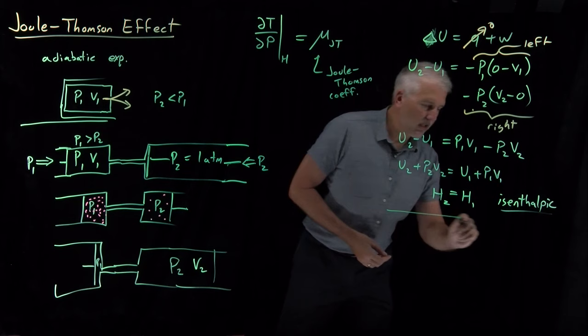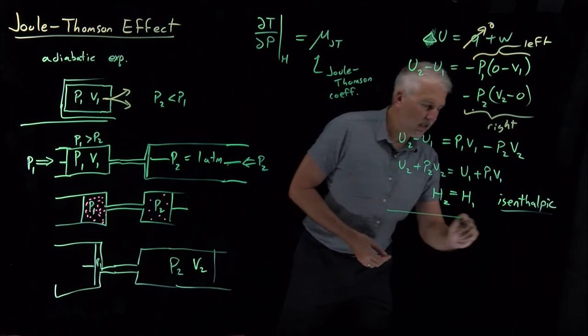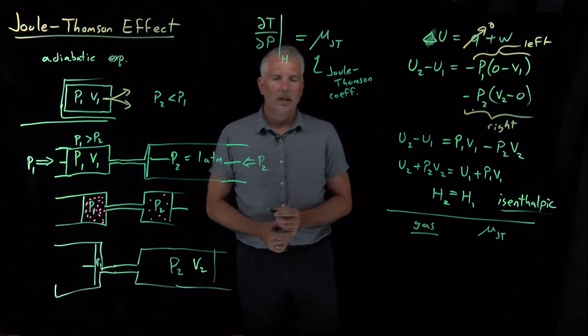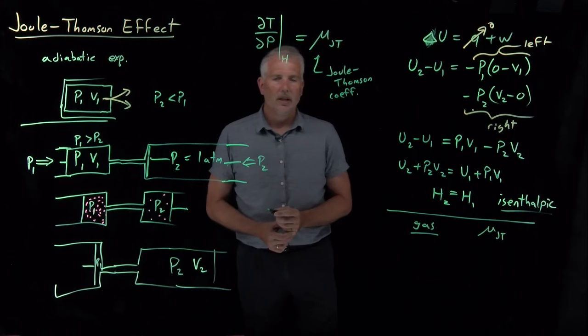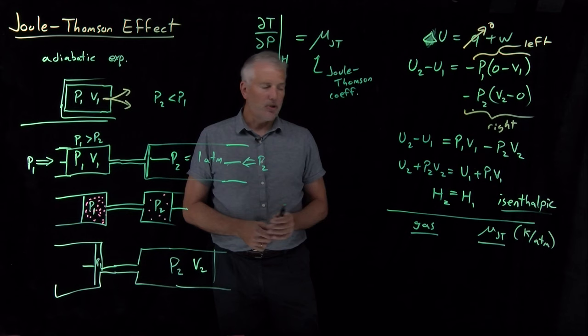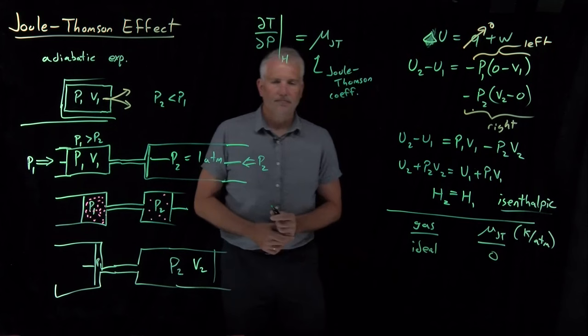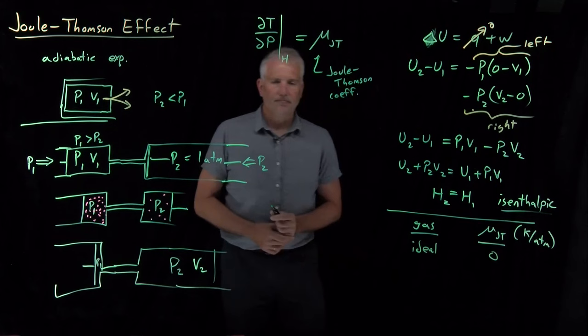So, to give you an idea of the size of that effect, I'll list some data here for a few gases and their values of the Joule-Thomson coefficient. So these Joule-Thomson coefficients I'll give you in units of Kelvin per atmosphere. So if I drop the pressure of a gas by one atmosphere, this is how many Kelvin the gas will drop in temperature. So, as I've mentioned, if I do that for an ideal gas under isenthalpic and adiabatic conditions, then there is no cooling down. The Joule-Thomson coefficient is zero.